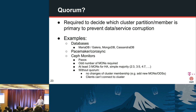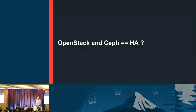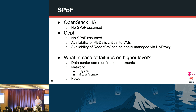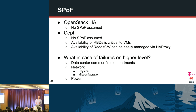If you lose the Ceph quorum, you can no longer manage cluster membership — adding new monitors or OSDs — and clients can no longer connect because they can't get information about where to retrieve data. The big question is: can OpenStack and Ceph work together in an HA setup? The assumption is that your OpenStack side has no single point of failure, and Ceph in general is HA-ready if you have enough monitors and no single point of failure, provided RBD availability is critical for your cloud.